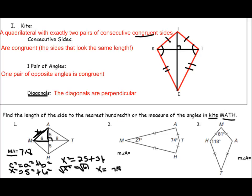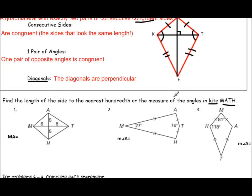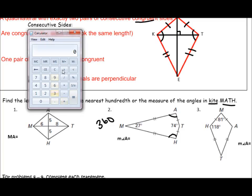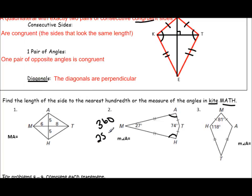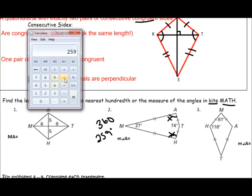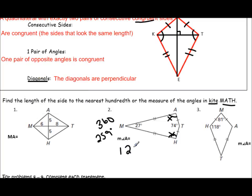The second problem utilizes the property that one set of opposite angles is congruent in a kite. We also have to remember that a quadrilateral has 360 degrees inside its angles. So we need to figure out what's left after we use the 27 and the 74 degrees: 360 minus 27 minus 74 gives us 259 degrees. That 259 degrees must be split evenly between the two congruent angles, so we divide by 2. The measure of angle A, which is the same as the measure of angle H, is 129.5 degrees.